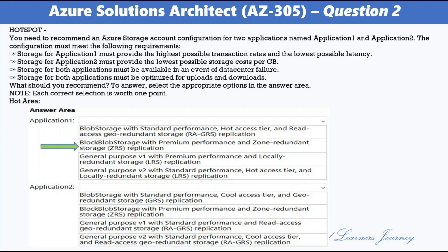For Application 2, the options are: Blob Storage with Standard Performance, Cool Access Tier and Zone-Redundant Storage Replication; Block Blob Storage with Premium Performance and Zone-Redundant Storage Replication; General Purpose V1 with Standard Performance and Read Access Geo-Redundant Storage Replication; General Purpose V2 with Standard Performance, Cool Access Tier and Read Access Geo-Redundant Storage Replication. The correct option is General Purpose V2 with Standard Performance, Cool Access Tier and Read Access Geo-Redundant Storage Replication.